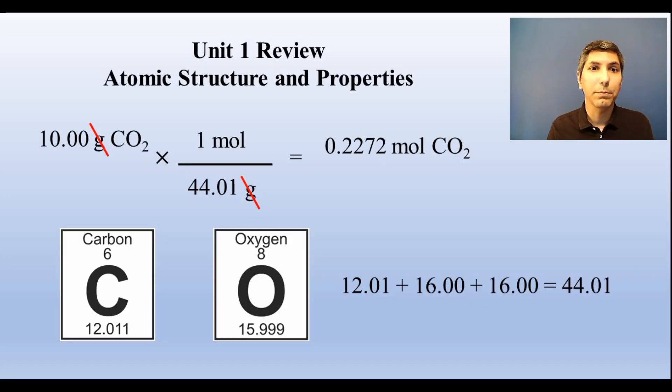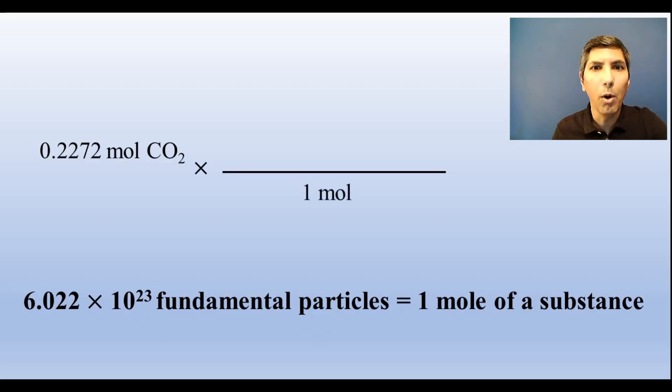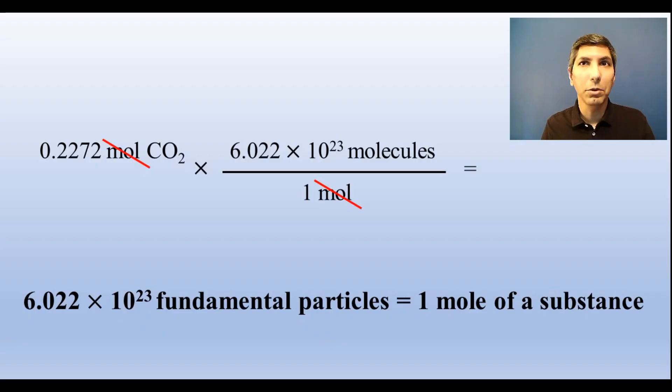You should also be able to convert particles to moles. There are 6.022 times 10 to the 23rd teeny tiny particles in a mole - atoms, molecules, ions, whatever it happens to be for that substance. So if you have those 0.2272 moles of carbon dioxide, you can convert to molecules by putting 1 mole on the bottom of your conversion factor and 6.022 times 10 to the 23rd molecules on the top. When you cancel out the units and multiply, you get 1.368 times 10 to the 23rd molecules.